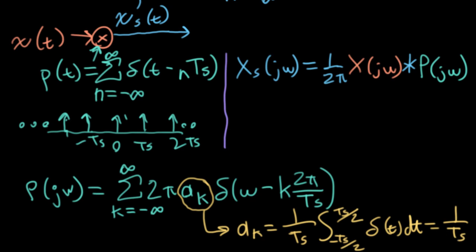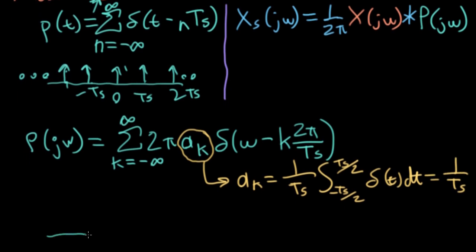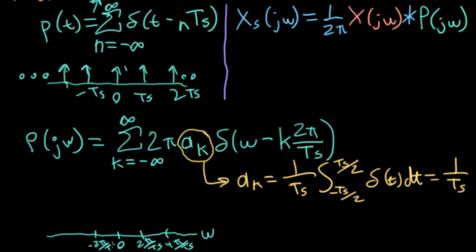So what does big P of j omega look like? Let's graph it. How are these things spaced? There's one at 2π over TS, one at 4π over TS, one at minus 2π over TS, and so on going in either direction — it's an impulse train where the height of each impulse is 2π over TS.